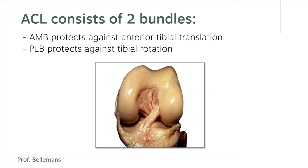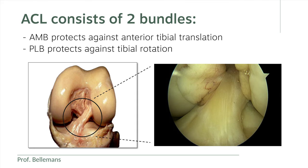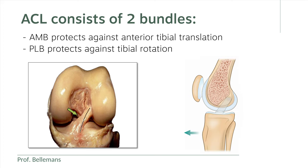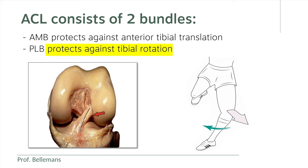So let's start from the beginning. The anterolateral ligament, or ALL, works in close conjunction with the ACL, the anterior cruciate ligament. The ACL consists of two bundles: the anteromedial bundle and the posterolateral bundle. You can see this very well during surgery — the anteromedial bundle runs anterior and medially, as the name says, and the posterolateral bundle runs posterior and laterally. We have known for a long time that the anteromedial bundle protects the knee against anterior tibial translation, while the posterolateral bundle protects against anterior tibial rotation, such as during a pivoting or twisting movement.